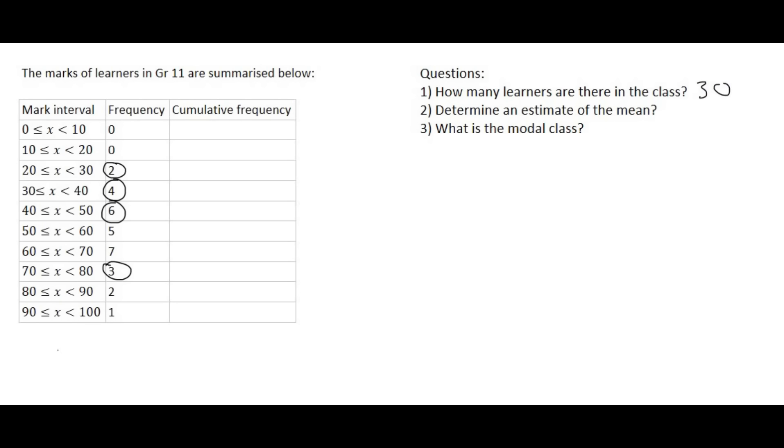The other option is to complete the cumulative frequency. Let me show you how that works. So here we're going to put a zero. Here we're also going to put a zero because there's zero people so far. Here we're going to put a two because there's two people so far. But then here we're going to put a six because there's six people so far.